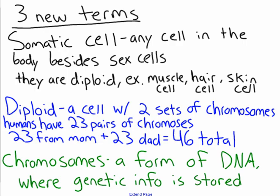Now let's describe how mitosis happens using three terms you might not have heard of before. Number one is somatic cell. Mitosis happens to somatic cells, and somatic cells are any cell in the body besides sex cells — so besides sperm or an egg. Examples of somatic cells include muscle cells, nerve cells, hair cells, and skin cells — all of these are somatic.